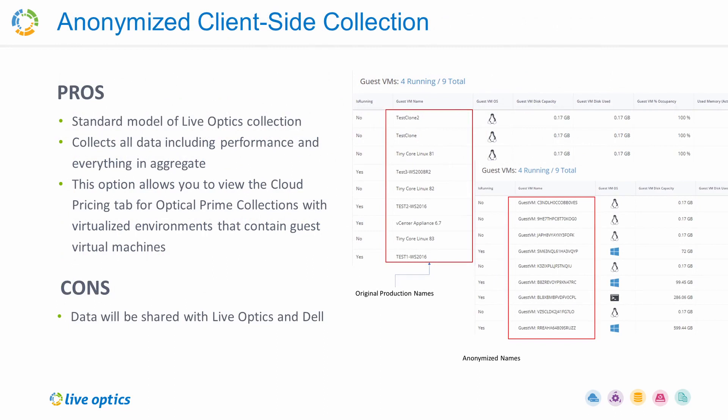Anonymized client-side collection. You can anonymize all the data being collected at the client side. The Live Optics collector will collect and send data to the Live Optics web service by masking server names and providing an alias prior to starting any data collection process. This will still perform a standard collection using the collector tool and includes configuration and performance data.